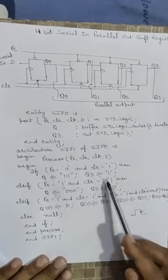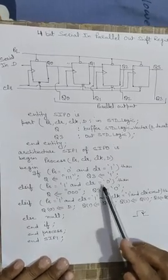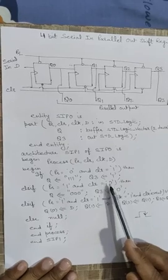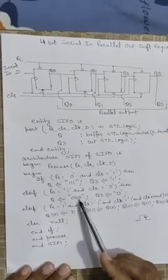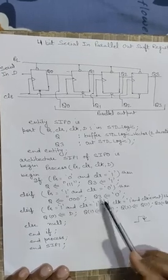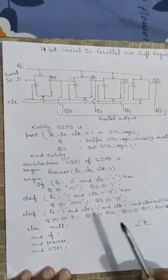Else if preset is 1 and clear is 0, so in this case the output of all the flip-flops will be 0. So we have taken Q is equal to 0 0 0 and array of 3 bits in double quotes and Q3 will be acting as 0 in single quotes.